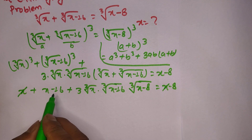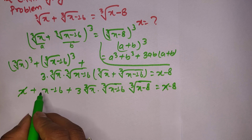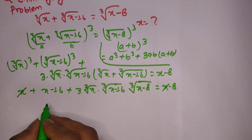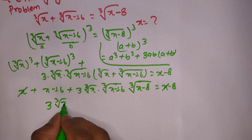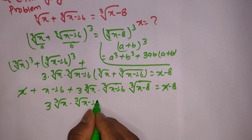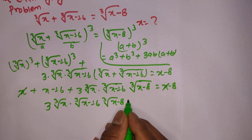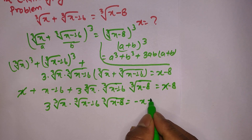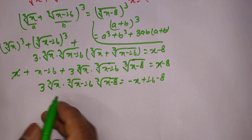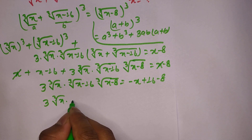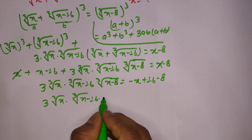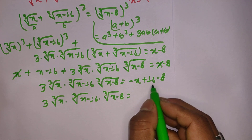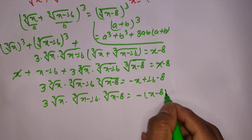We cancel x from both sides. Moving terms to the right side, we get: 3 times cube root of x times cube root of x minus 16 times cube root of x minus 8 equals minus x plus 16 minus 8, which simplifies to negative x plus 8. Taking minus as common, this becomes minus times (x minus 8).